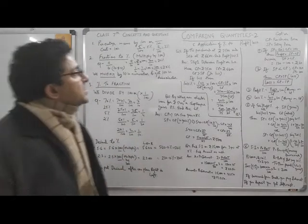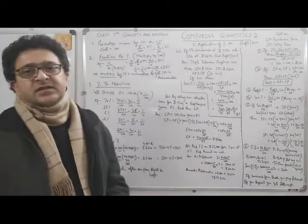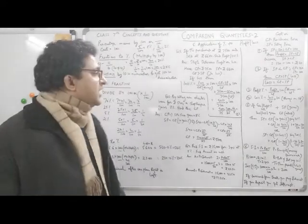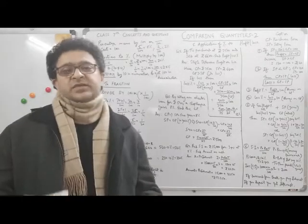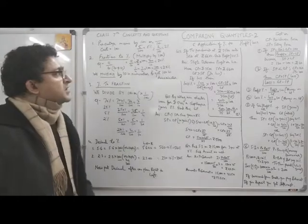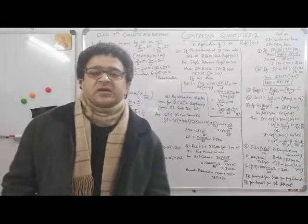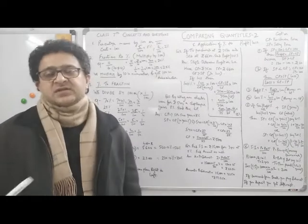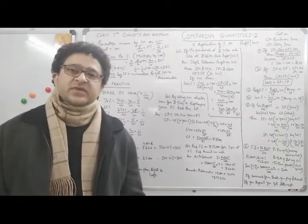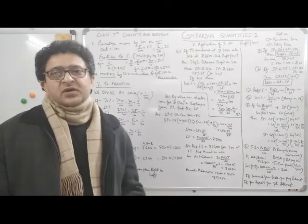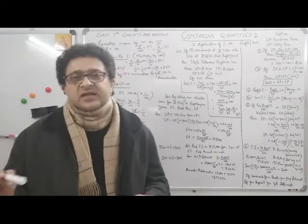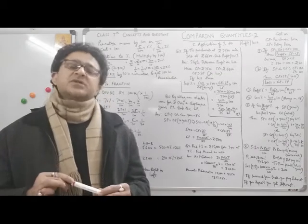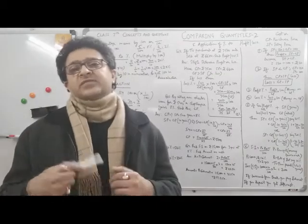Now the important part: cost price, selling price, profit percentage, loss percentage, and simple interest. When you purchase an article, the price you pay is the cost price (CP). When you sell the article, it is at the selling price (SP). Usually, the selling price is higher than the cost price because we all want to sell at a profit. We never want to sell at a loss — but in exam questions, you can also get questions on loss.